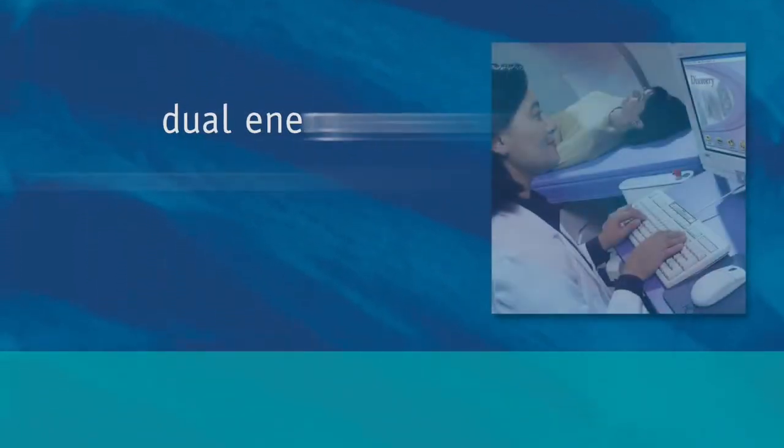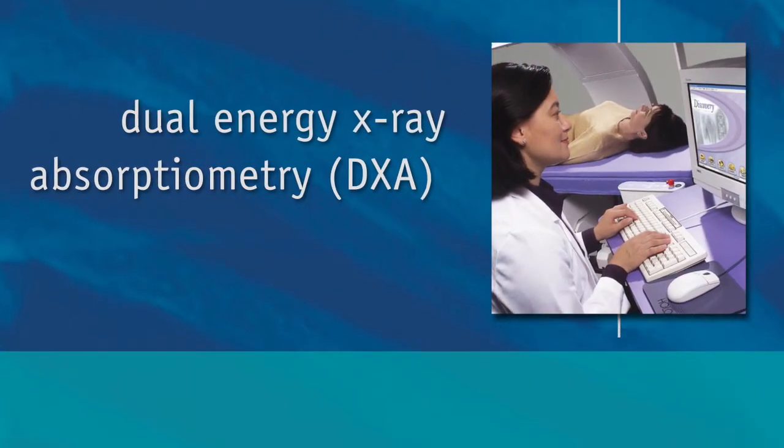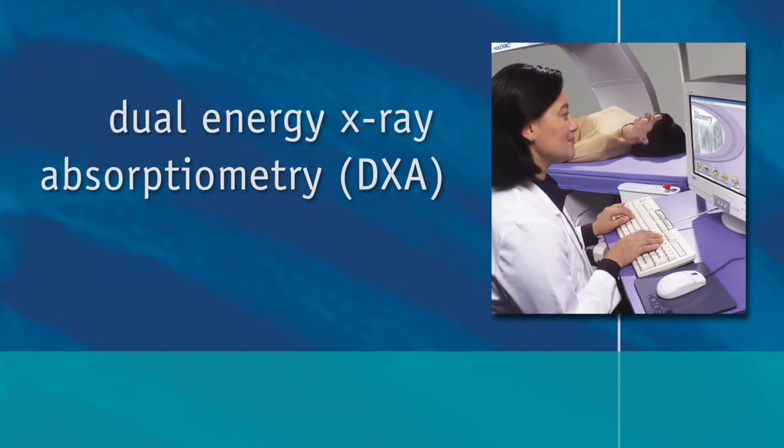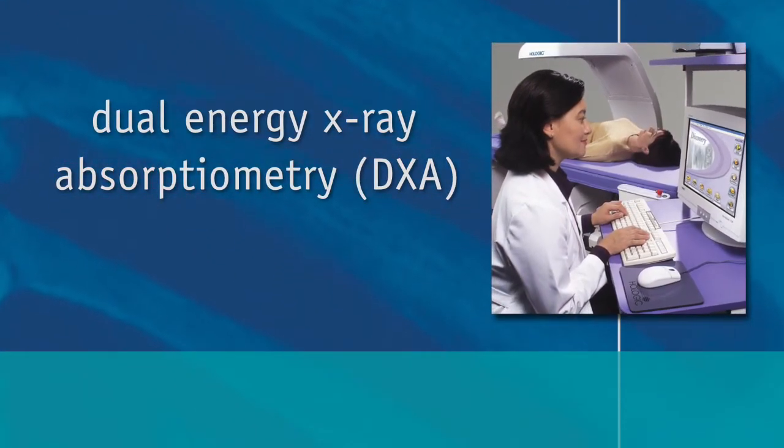Earlier studies using dual energy x-ray absorptiometry (DXA) have suggested that bone mass peaks long past sexual and skeletal maturity, potentially into an individual's late 20s or beyond.